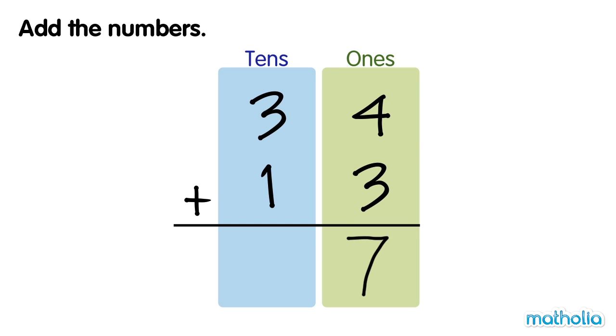Next, add the tens. 3 tens plus 1 ten equals 4 tens. 34 plus 13 equals 47.